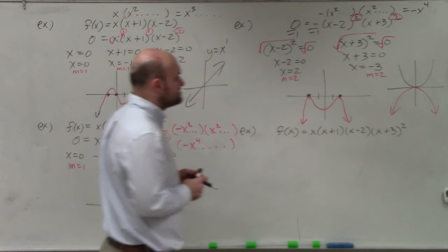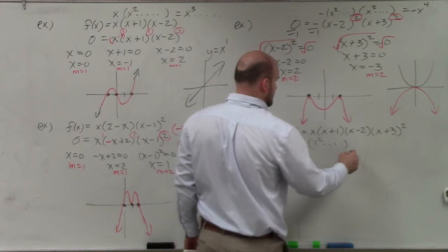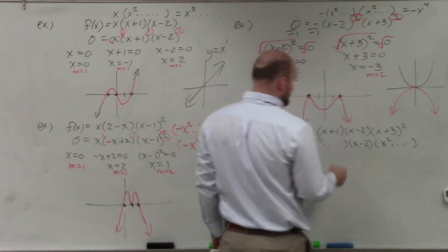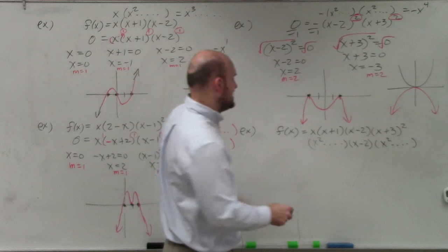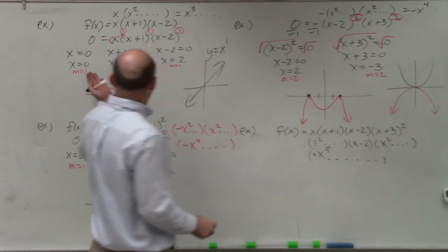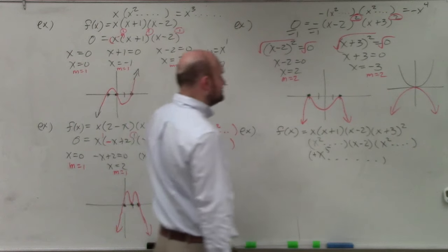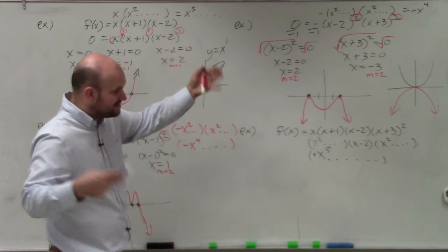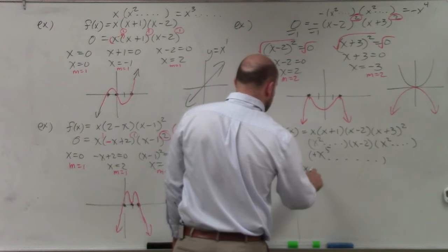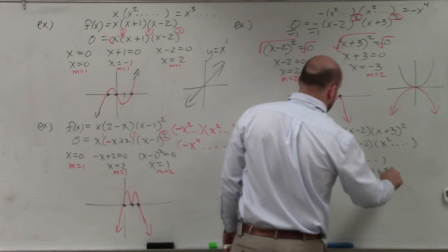Last but not least, let's handle this example. Multiplying out, I get x squared times (x minus 2) and (x plus 3) squared also gives x squared. So x squared times x times x squared gives x to the fifth, which has a positive leading coefficient — the same end behavior as a positive odd-degree function. Let's find the zeros: 0 equals x times (x plus 1) times (x minus 2) times (x plus 3) squared.